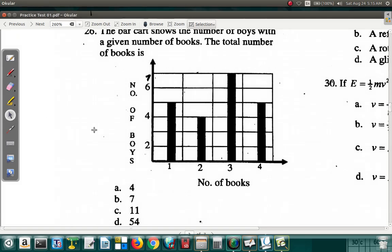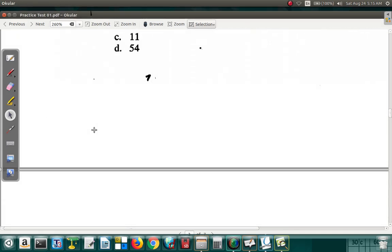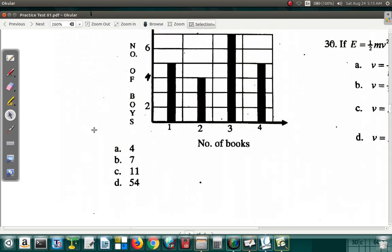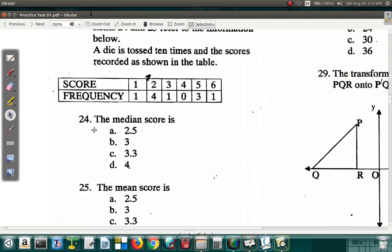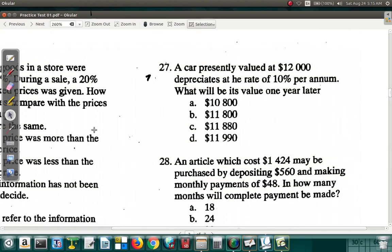Let's look at question 27. Question 27 says that a car presently valued at $12,000 depreciates at a rate of 10% per annum. What will be its value one year later? Depreciate, that means it loses value.